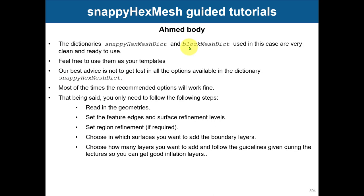When it comes to snappyHexMesh, you just need to: read geometries, set the feature edges and surface refinement, set region refinement for castellating — both volumetric and surface. Just put in the refinement. For snapping, use the default recommended options. Then if you want to add the boundary layer, choose the surfaces and add your boundary layers.